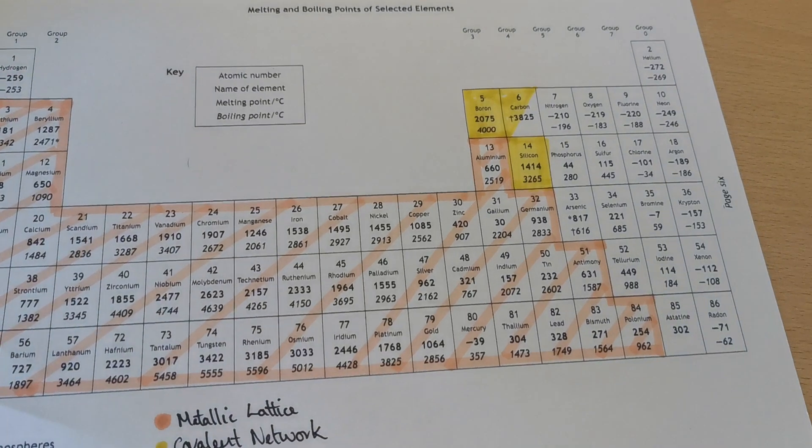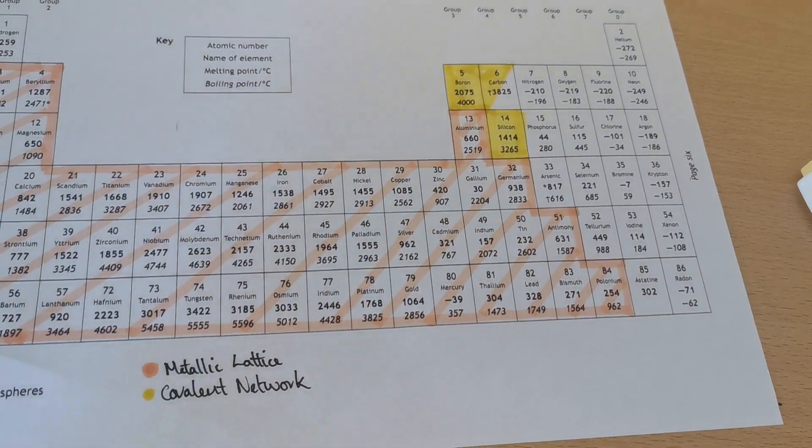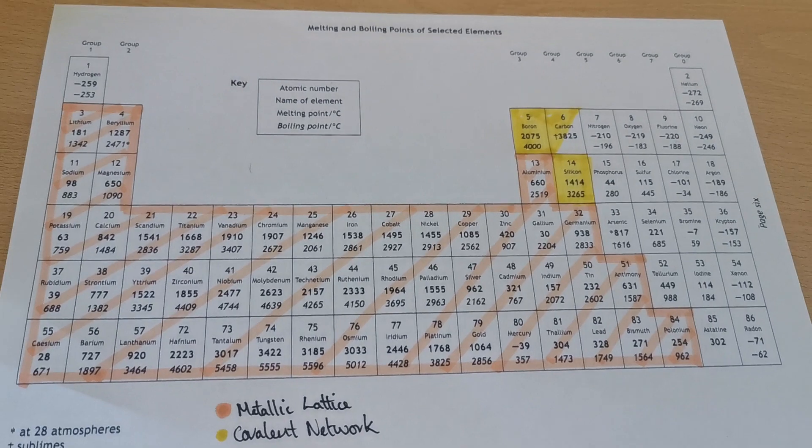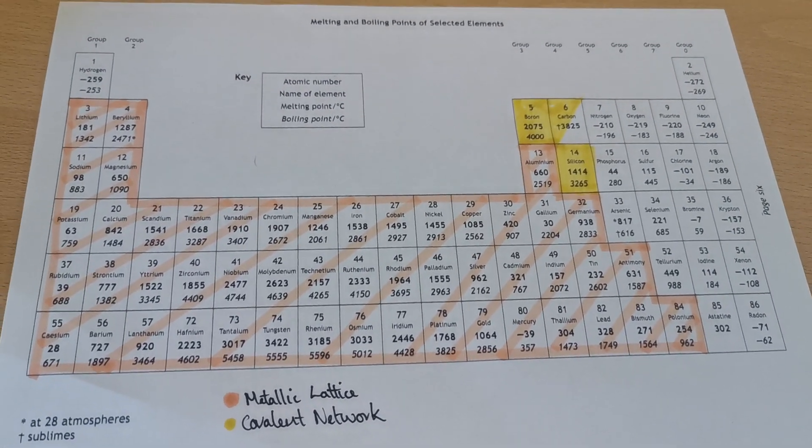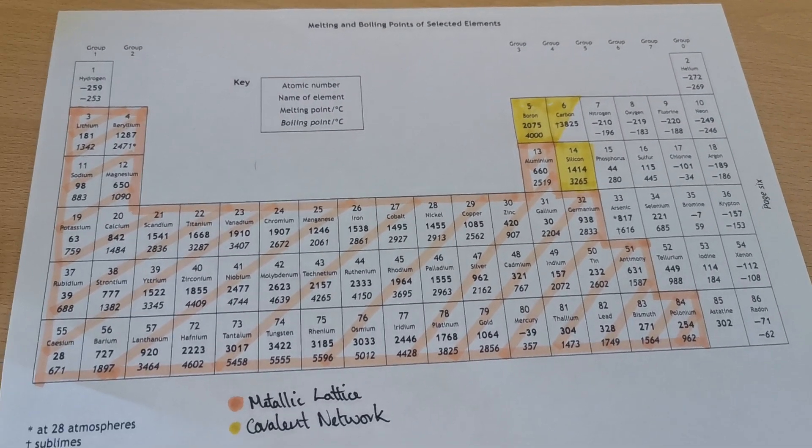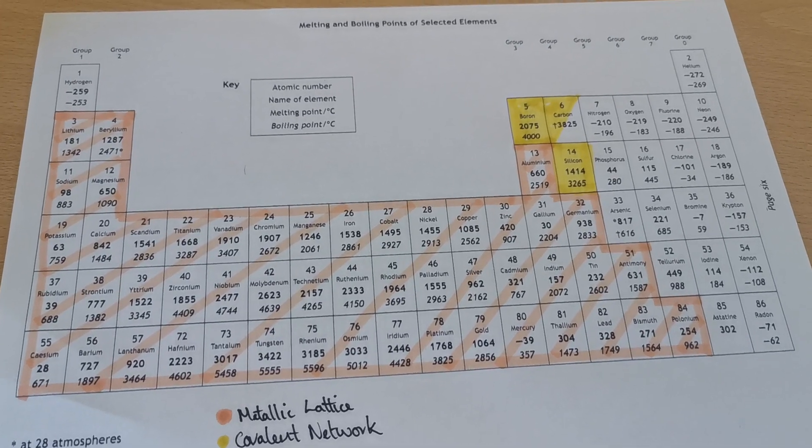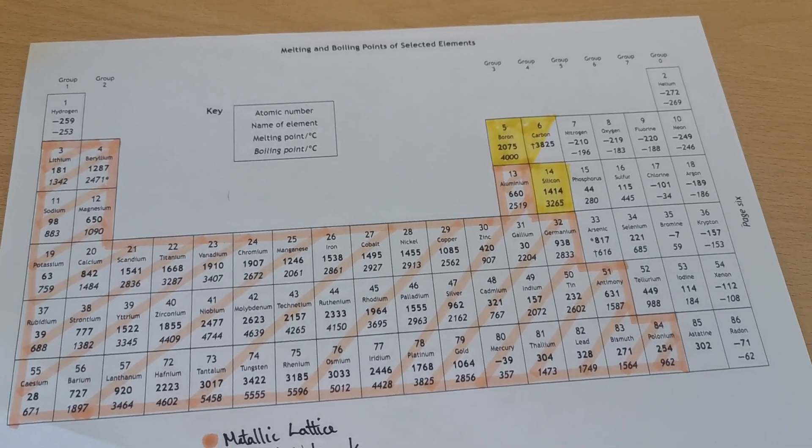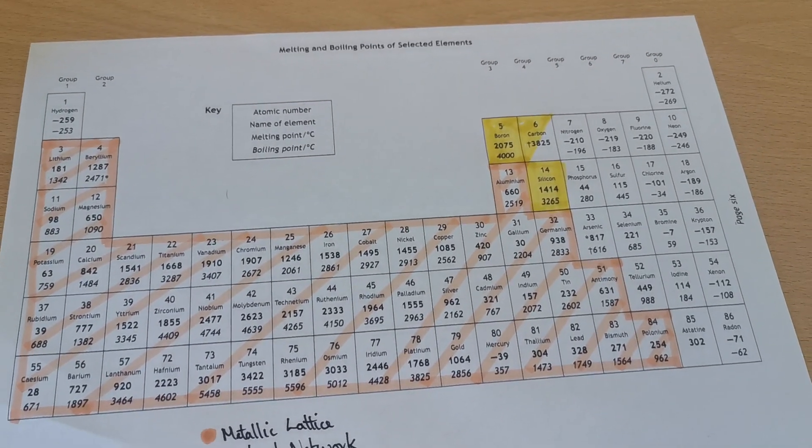Now we're going to move on to covalent molecules. In National 5 you would have learned about the seven diatomic elements. So hydrogen, nitrogen, oxygen, fluorine, chlorine, bromine and iodine. They all exist in diatomic molecules with two of the atoms stuck together.